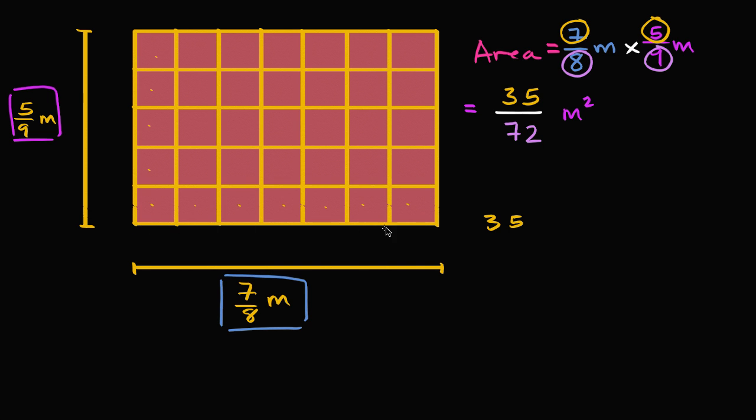Well, if this is 7 eighths meters wide, and this is divided into 7 equal sections in the horizontal direction, that means that each of these is exactly 1 eighth of a meter wide. And by that same logic, if this whole thing is 5 ninths, and the height of each of these is 1 fifth because we have 5 rectangles per column, then the height of each of these is going to be 1 ninth of a meter.